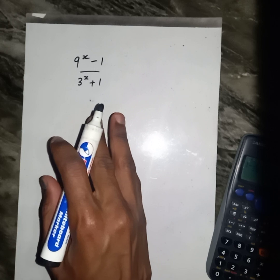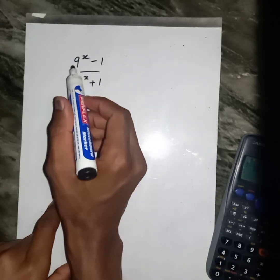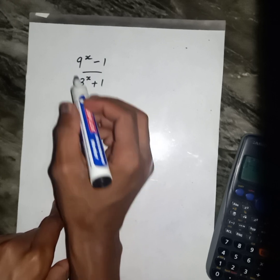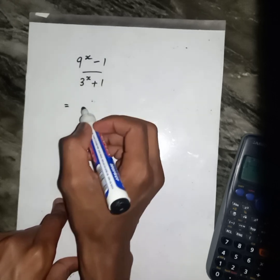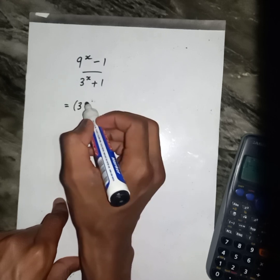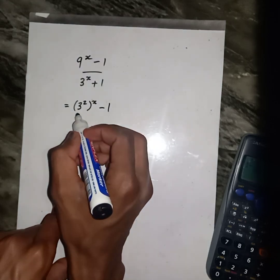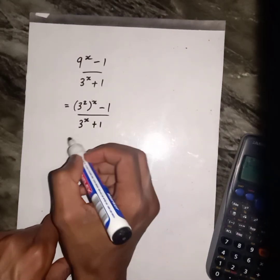How then are you going to simplify the following? The first thing, we need prime base. We must make this 9 to be a prime. Then it's going to be 3 squared, 3 squared x minus 1, 3^x plus 1.